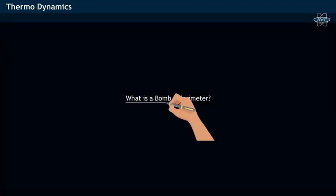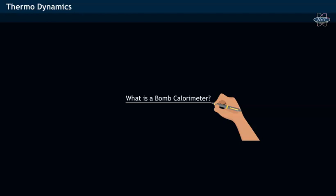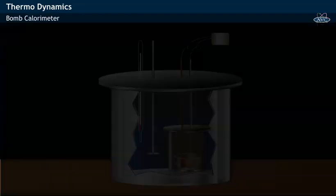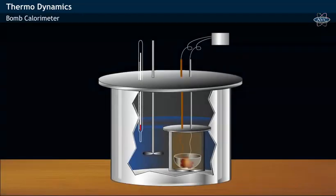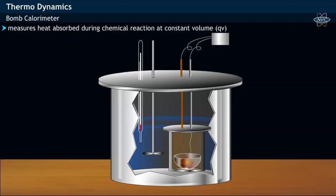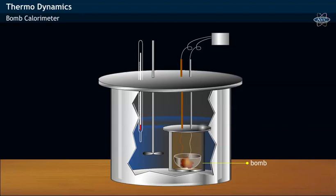What is a bomb calorimeter? A bomb calorimeter is equipment used to measure the heat absorbed by a chemical reaction occurring at constant volume, or QV. This is the heat of reaction. A bomb calorimeter consists of a steel vessel called a bomb.